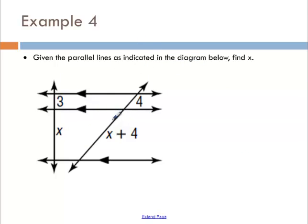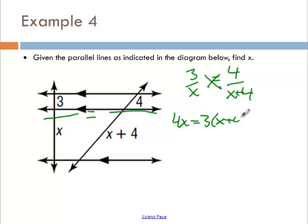This is the side splitter corollary. It's three parallel lines, but it's the exact same setup. Here's a fraction, here's a fraction. So 3 over x equals 4 over x plus 4. 4x equals 3 times x plus 4. I'm going to distribute, and I get x equals 12.